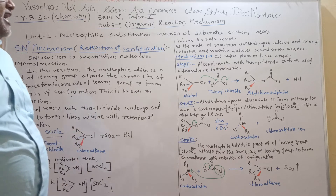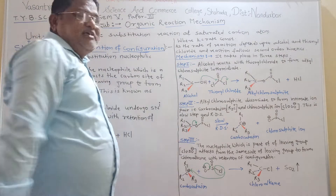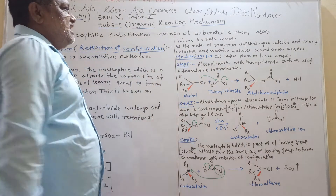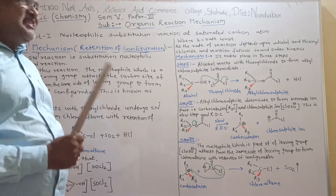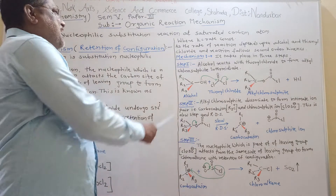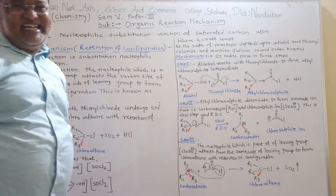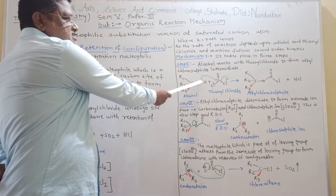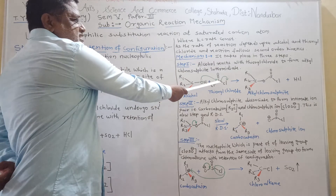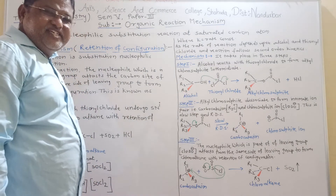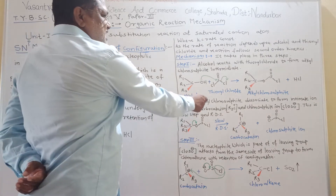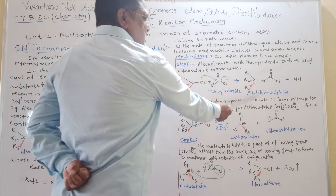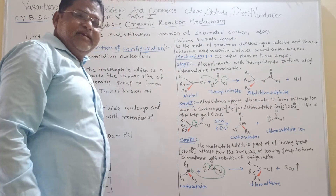Now, the mechanism of this reaction takes place in three steps. In the first step, alcohol reacts with thionyl chloride to form alkyl chlorosulfite as an intermediate. The electron pair of oxygen attacks on the sulfur atom, which is electron deficient, and chlorine leaves along with its bond, giving us alkyl chlorosulfite and HCl as products.